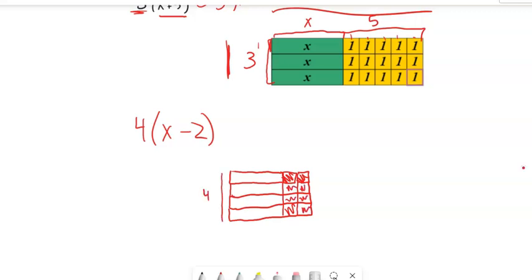Again, notice this side is four long, right? Four ones. This side up here, this is an x and this is a negative two. Four multiplied by x minus two. Well, that would be four x's and negative eight ones. Great. So there's that idea of that distributive property.